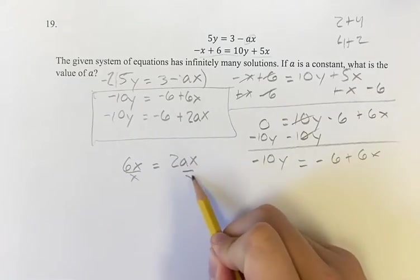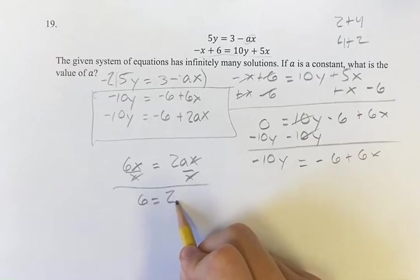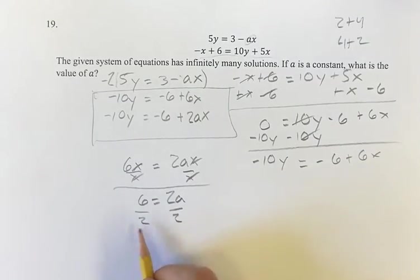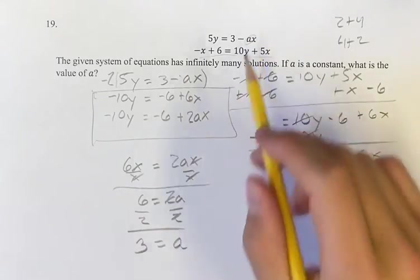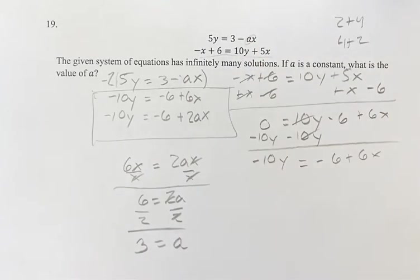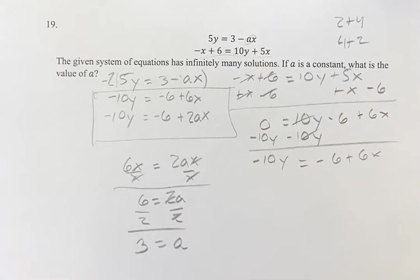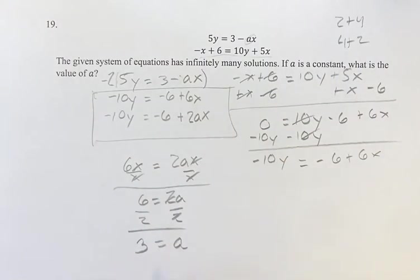Dividing both sides by x, we're left with 6 is equal to 2a. To solve for a, divide both sides by 2 — a is equal to 3. So if we plug in 3 for a, these two equations in their system are going to have infinitely many solutions. So if a is a constant, what is the value of a? We just found it: a is equal to 3. That's going to be our final answer.